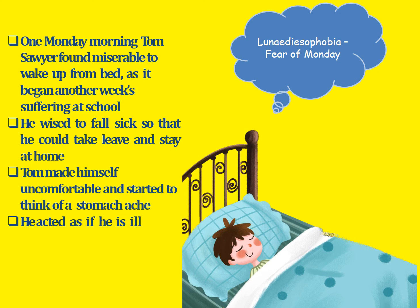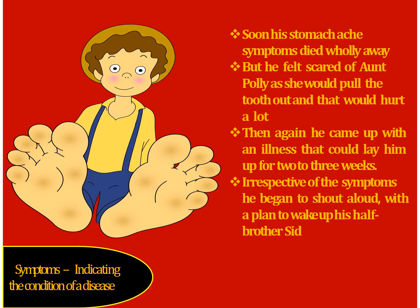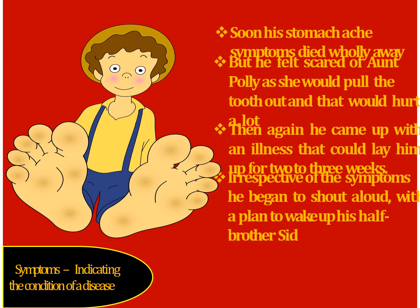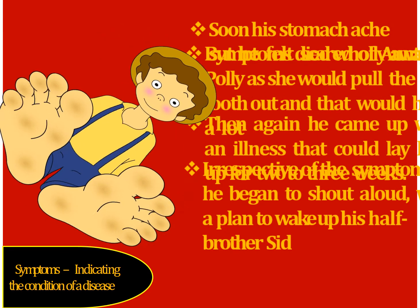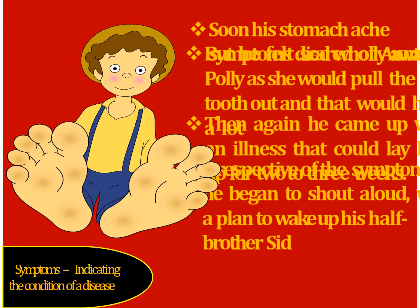This is called 'Leonardo suburbia,' meaning fear of Monday. On Monday morning, Tom Sawyer found it miserable to wake up from bed, as it began another week of suffering at school for him. He looked sad and decided on a plan to skip his Monday classes. He wished to fall sick so that he could take leave and stay at home. Tom made himself uncomfortable and started to think of a stomachache and acted as if he was ill. Soon his stomachache symptoms died away. He thought for a while and discovered that one of his upper teeth was loose, but he felt scared of Aunt Polly, as she would pull the tooth out and it would hurt a lot.